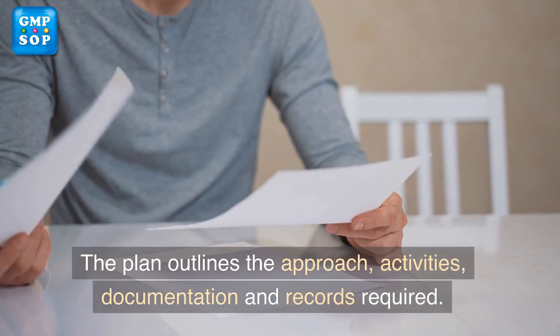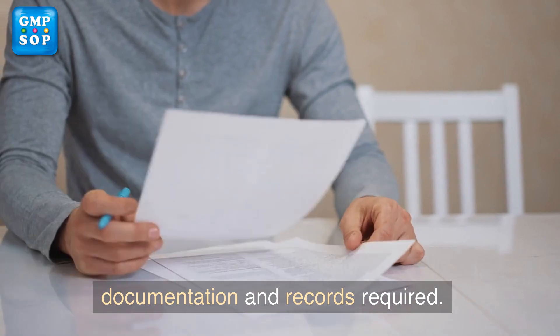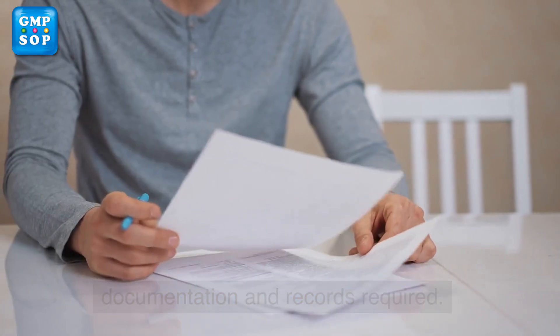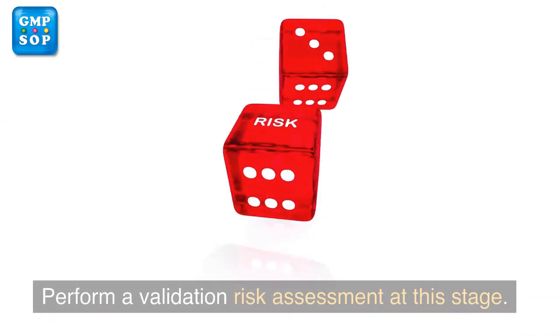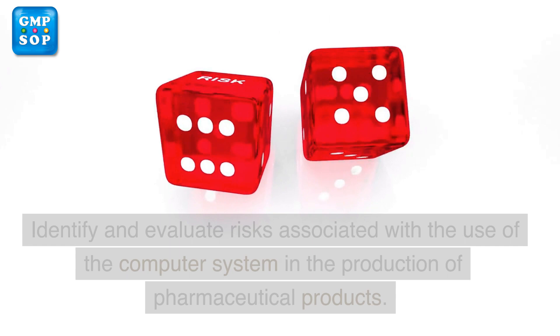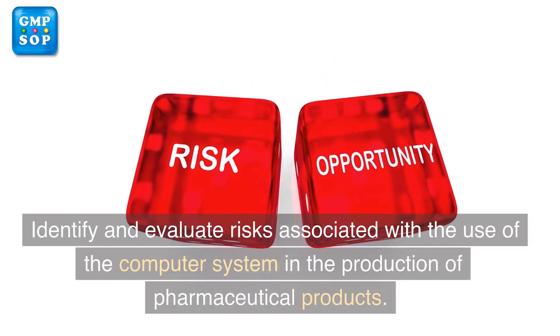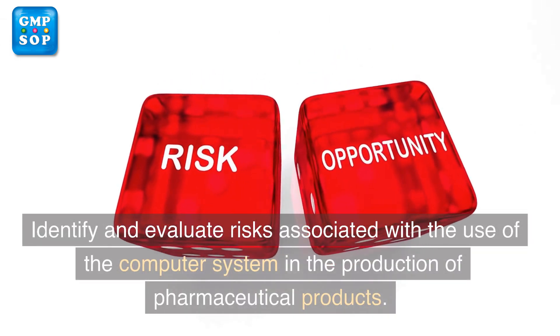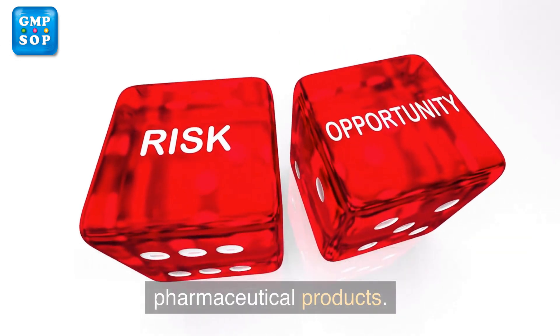The plan outlines the approach, activities, documentation and records required. Perform a validation risk assessment at this stage — identify and evaluate risks associated with the use of the computer system in the production of pharmaceutical products.